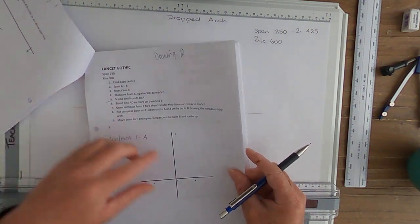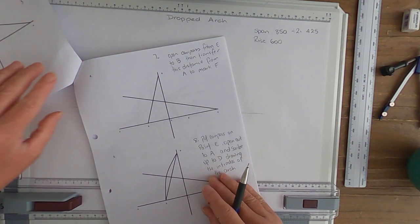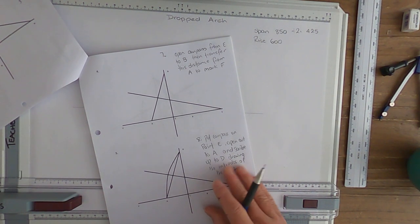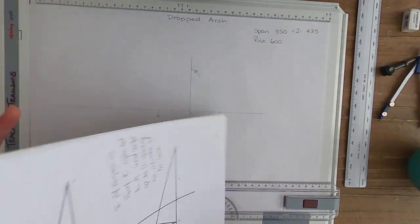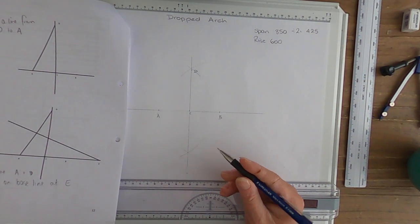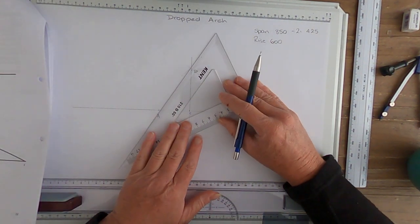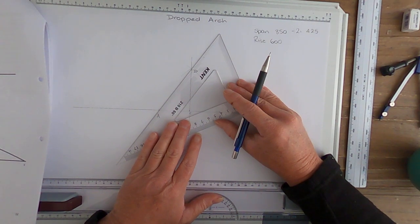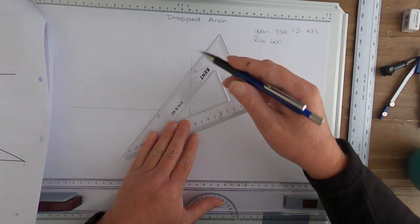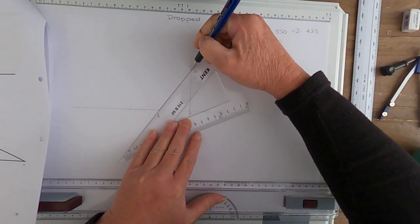So I've got our Lancet Gothic and we're going from step 5. Here it says scribe a line from D to A, so we just get our rule, put it on A and D, and scribe our line up.